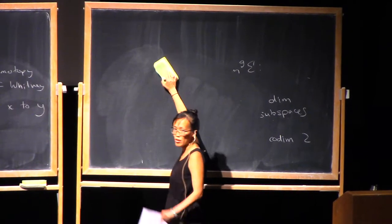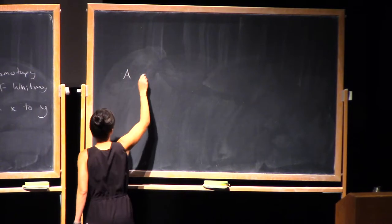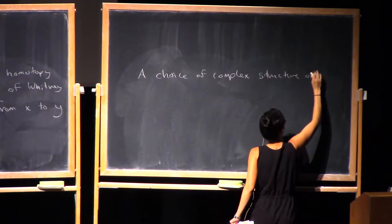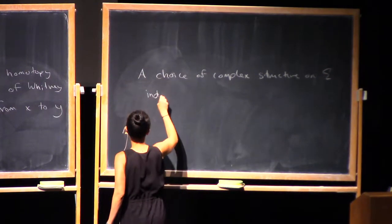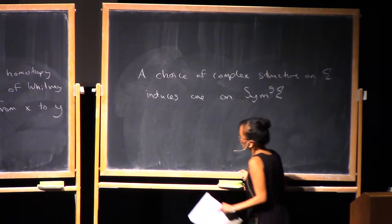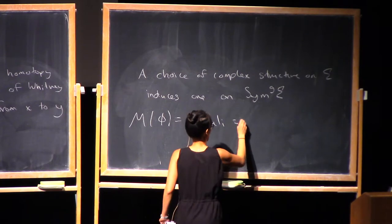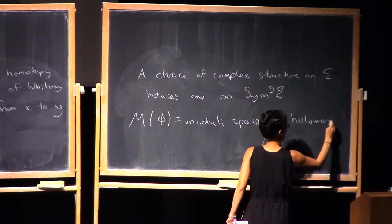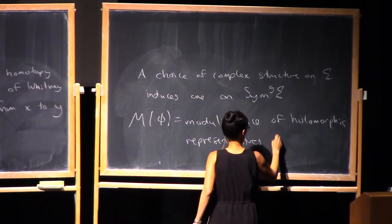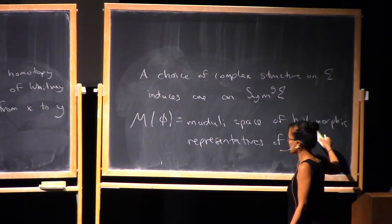So far I haven't used anywhere that I'm thinking of this disc as sitting in the complex plane, but that will show up now. A choice of complex structure on sigma induces one on Sym^g. So then we can look at the moduli space of holomorphic representatives of phi. Generically, this is going to be a smooth manifold.